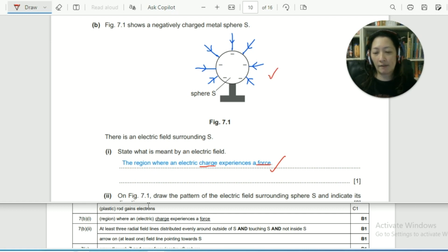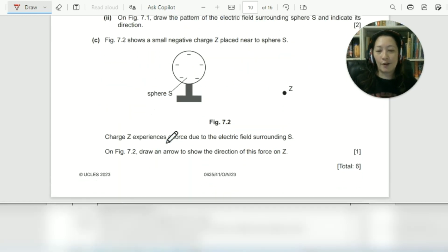So this is correct. We've got our one mark. And another mark is given for an arrow on at least one field line pointing towards S. So if you only drew one and you didn't draw the others, you could probably still get that other mark. But it's always good practice to draw on all the lines just to show that you do understand how the field lines work. So yes, we've got two marks for the diagram.